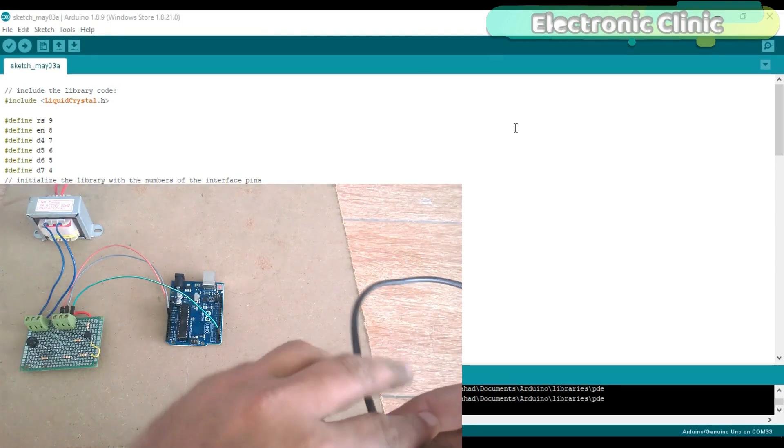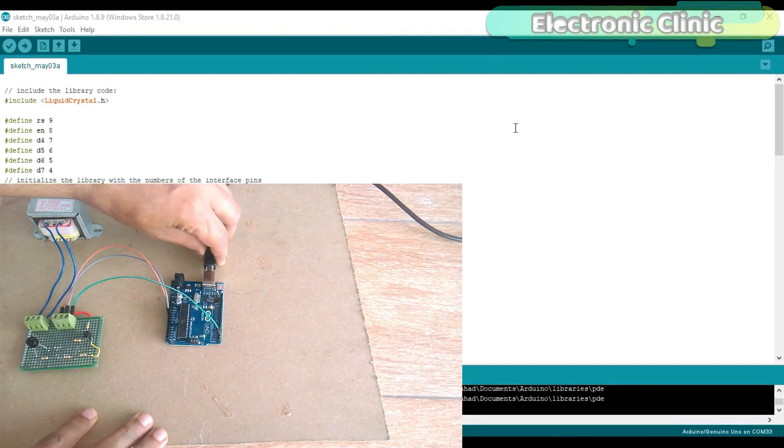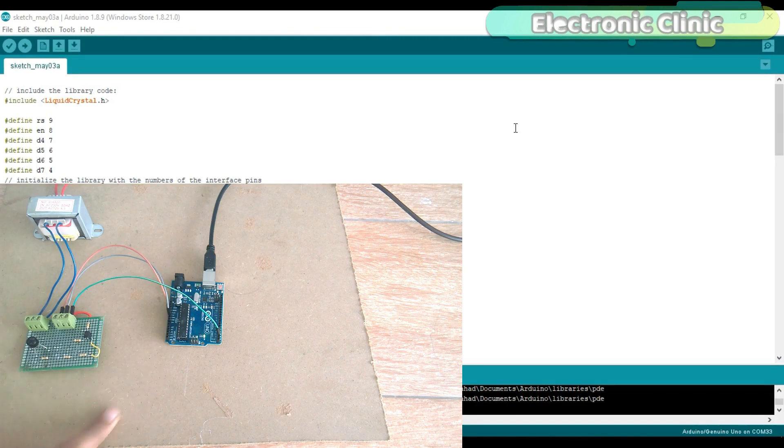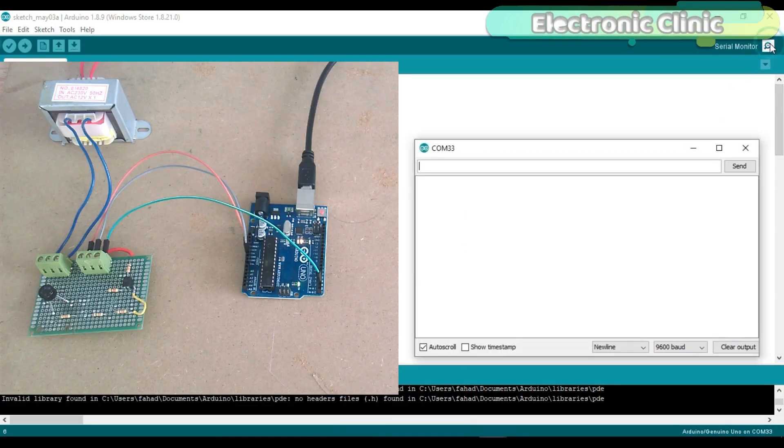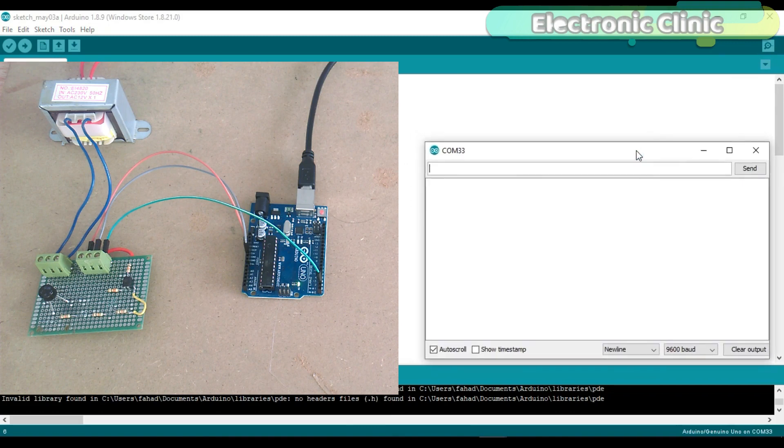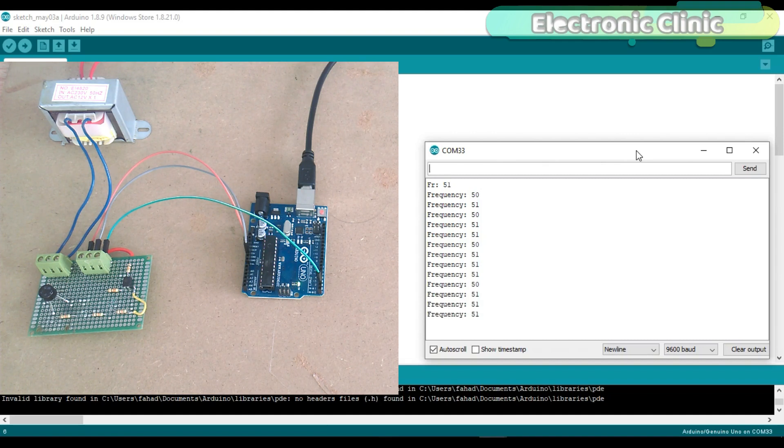The next version will be based on IoT based mains frequency monitoring system using NodeMCU ESP8266 WiFi module and Blynk application. Subscribe now so that you never miss any of my upcoming tutorials. Support me on Patreon for more videos.